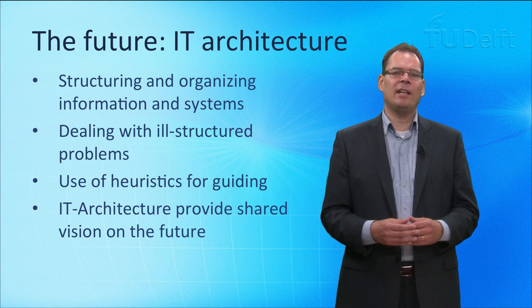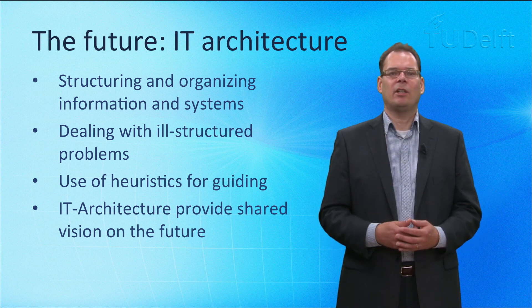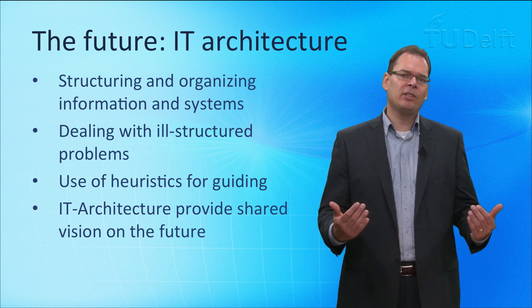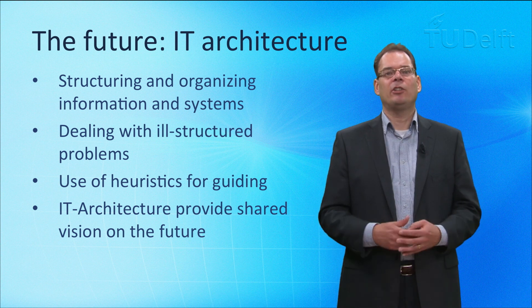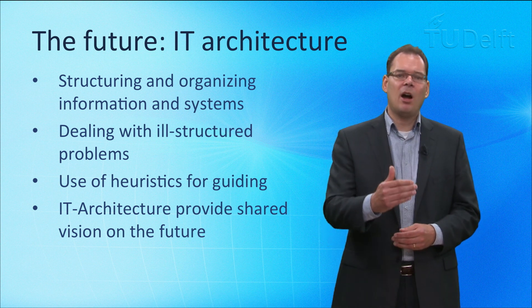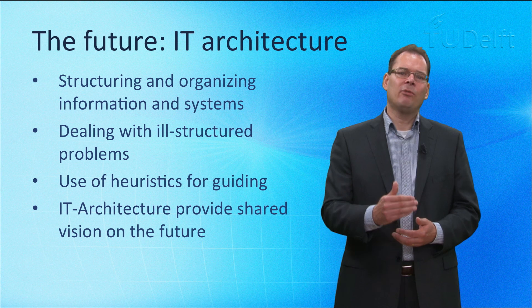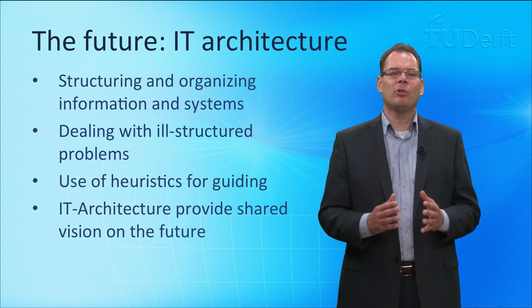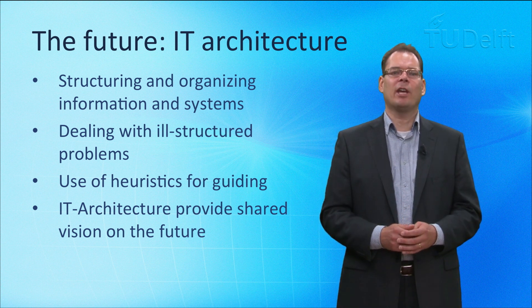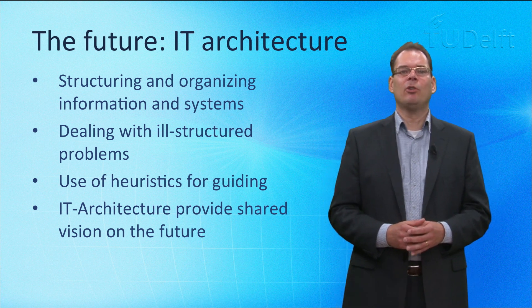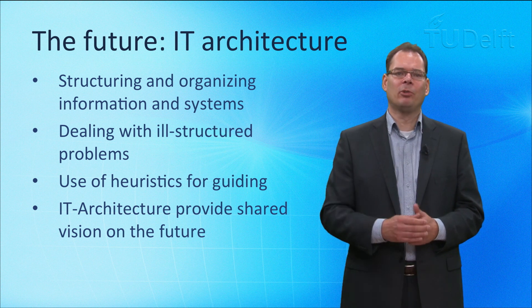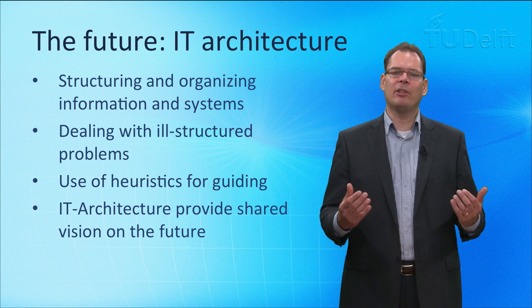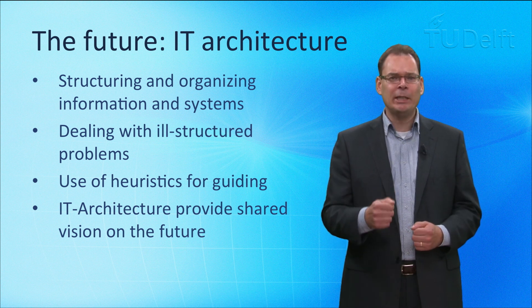We cannot engineer the situation — it is simply too complex. There are many players having limited authority, different requirements, a variety of systems and so on. Instead of engineering, we have to architect. Architecting focuses on ill-structured problems. There is no optimum, but we can use heuristics to improve the landscape. Heuristics refer to the use of past experience to arrive at suitable solutions. A well-known example of heuristics is to keep the IT landscape as simple as possible — keep it simple.